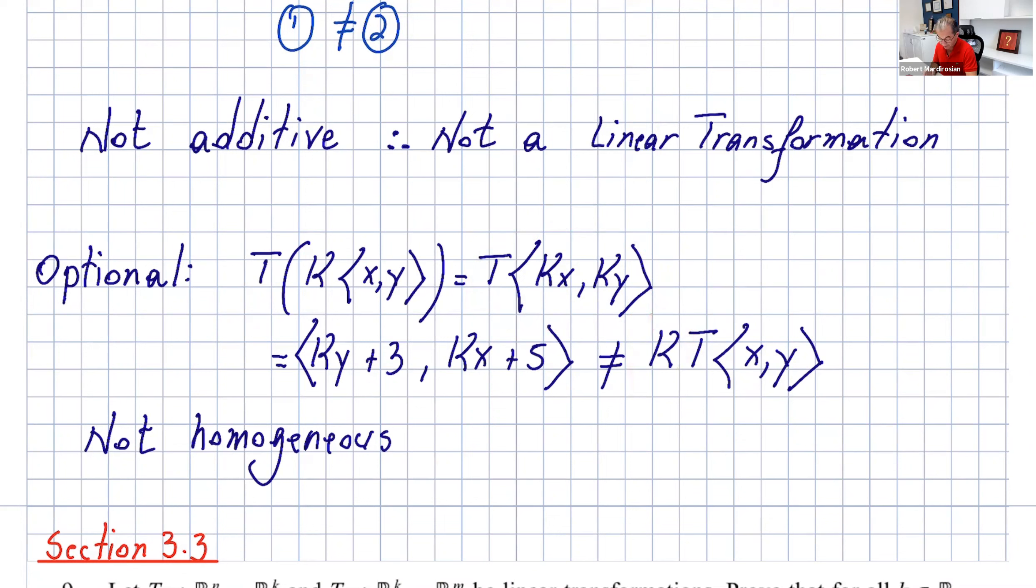So that shows it's not homogeneous. This is not a linear transformation. Whichever part is easier for you, you can try that. And if it doesn't work, then it's not a linear transformation. But if this one is satisfied, then for sure you have to do the second one to see if the second one is satisfied also.